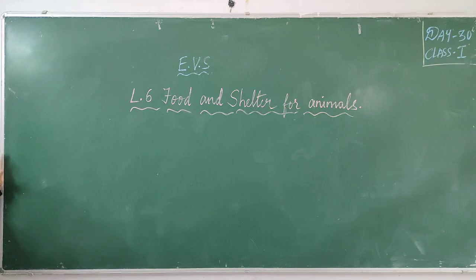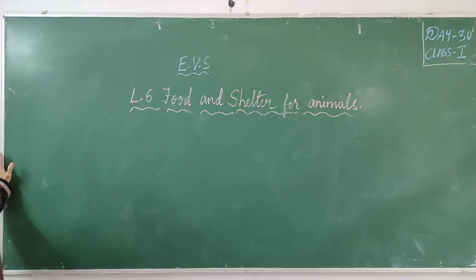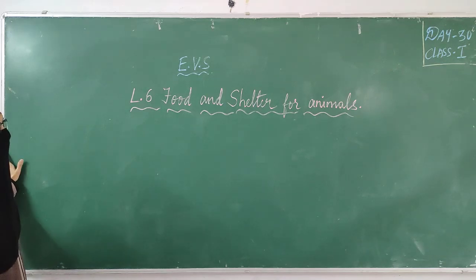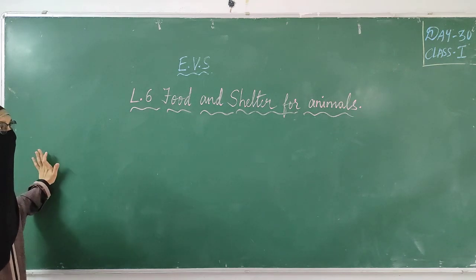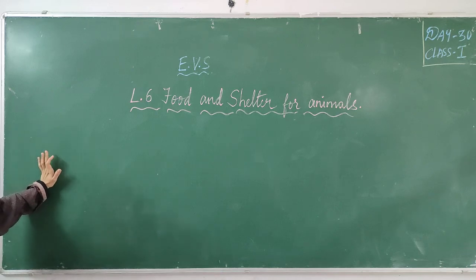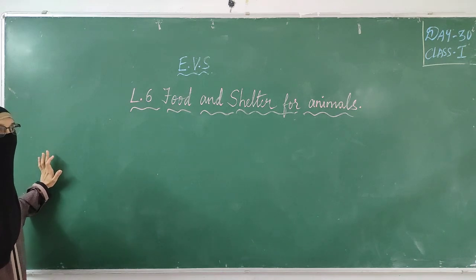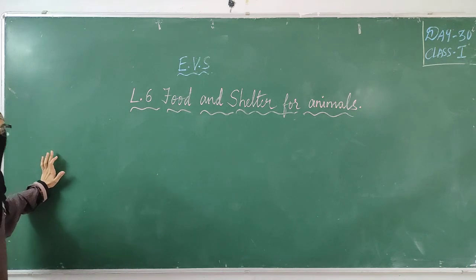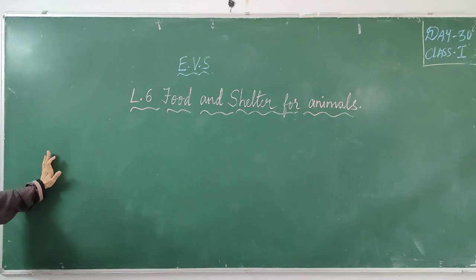For example, plant-eating animals. Animals which eat plants are cow, buffalo, goat, zebra, elephant, deer. These are the animals that eat plants, leaves, or grass. These are plant-eating animals.